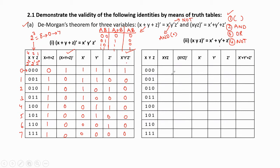The second theorem states (xyz)̄ = x̄ + ȳ + z̄. Let us take the LHS part, which is (xyz)̄. To verify with the truth table, we again write the input variables in the first column and write the eight combinations of binary based on binary weights. In the second column, from the LHS part, we follow the order of priorities.